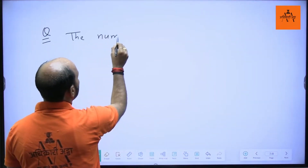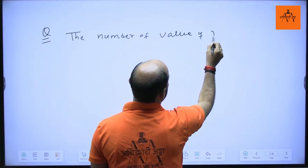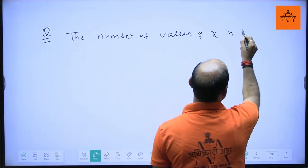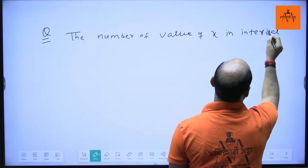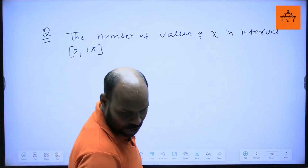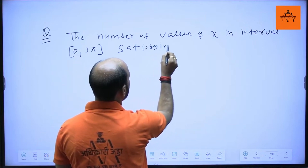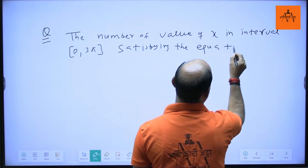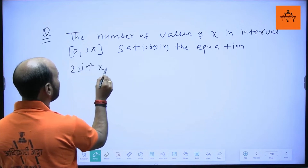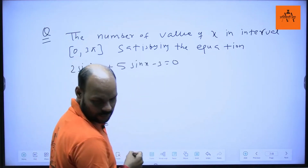The number of values of x in the interval 0 to 3π satisfying the equation 2sin²x + 5sinx - 3 = 0 is?